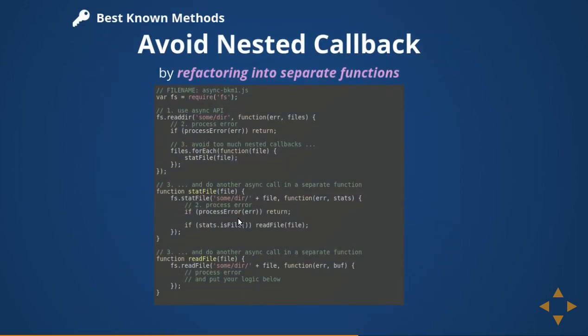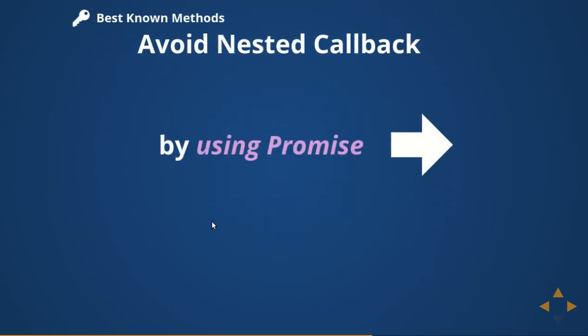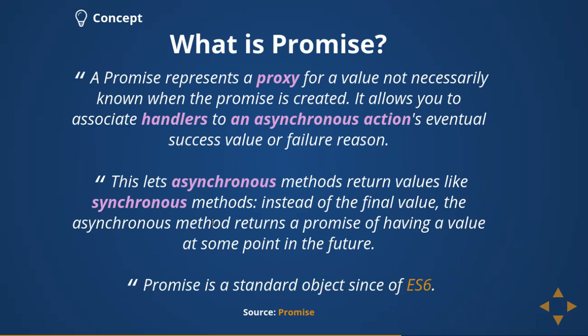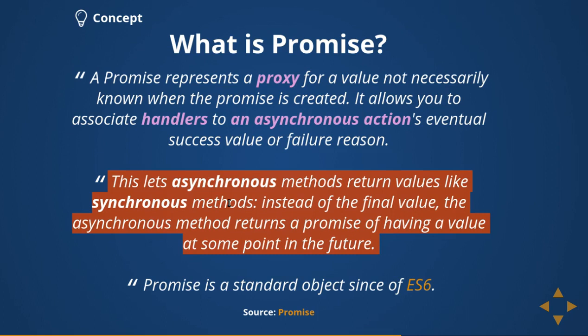To avoid nested callbacks, you can either separate the functions or use promises. Promises are a proxy object representing an asynchronous operation whose value is not known initially — it is returned as a promise object. This lets asynchronous methods return a value like synchronous methods. Instead of a final value, they initially return the promise object instantly, and you can do a `.then()` only when the promise is resolved or rejected.